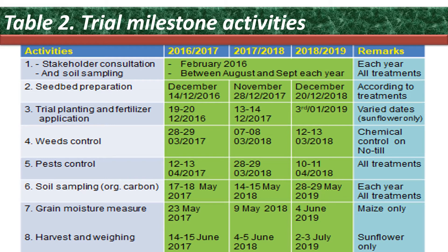Table two outlines the trial milestone activities, starting with stakeholder consultation, up to eight activities in total. There was not necessarily a specific order to the sequence of activities — it all depended on rainfall, disease and pest outbreaks encountered, as well as the time period of harvesting as it correlated with the time of planting.